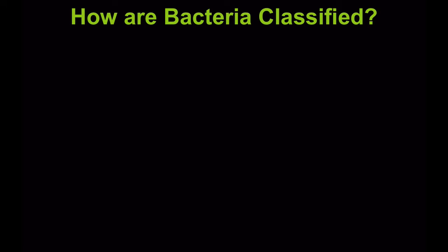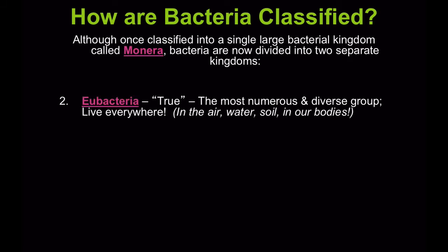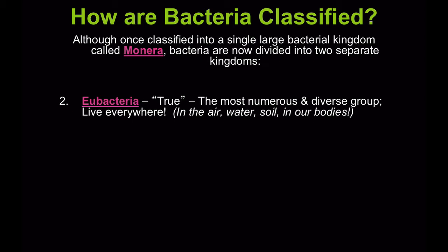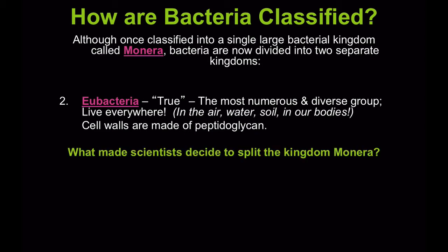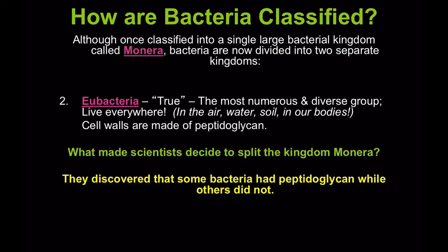Another classification is eubacteria, or true bacteria, the most numerous and diverse group. They live everywhere — in the air, water, soil, and even in our bodies. Their cell walls are made of peptidoglycan, which is a protein sugar. The reason scientists decided to split the kingdom Monera is they discovered that some bacteria had peptidoglycan while others did not.